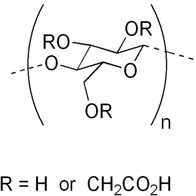Carboxymethyl cellulose, or cellulose gum, or Tylose powder, is a cellulose derivative with carboxymethyl groups bound to some of the hydroxyl groups of the glucopyranose monomers that make up the cellulose backbone.